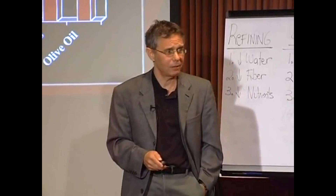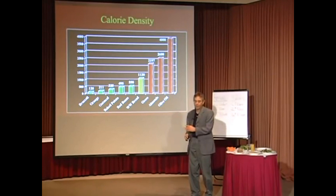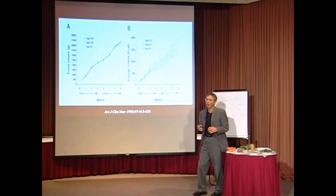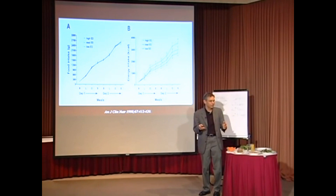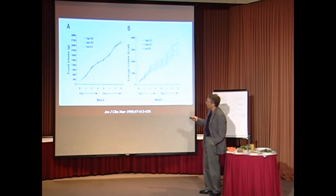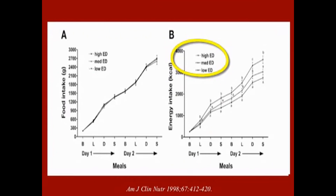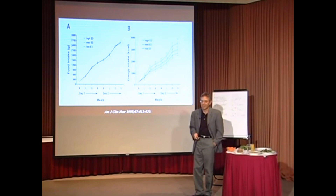Fifty or so came out of Penn State along with Barbara Rolls. In fact, here's one of the studies. She followed people over a few days to watch the amount of food they ate. She didn't tell them anything — she just watched them. And it turned out that regardless of what you ate, the weight of the foods you ate was pretty similar. People eat a certain amount of food each day. But depending on whether it was high in calorie density — ED means energy density or calorie density — whether it was low or high, look what happened to the caloric intake. Because we ate a similar amount of weight of food, if we change the calorie density, what happens to the calories we take in? It changes.